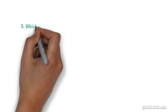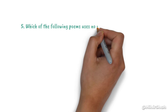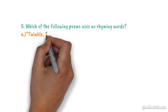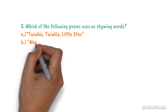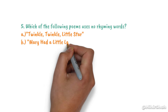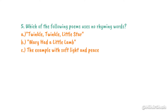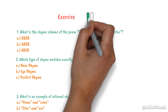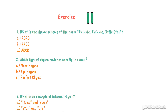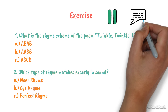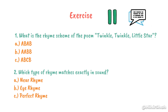And number 5: Which of the following poems uses no rhyming words? Twinkle Twinkle Little Star, Mary Had a Little Lamb, or the example with soft light and peace? Pause the video, solve the exercise, and share your answers in the comments. To know the answers, please check the description of the video.